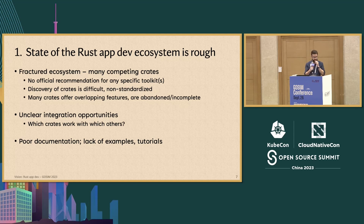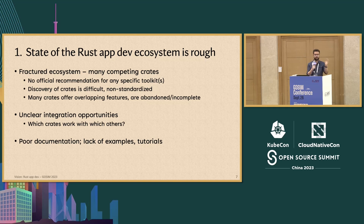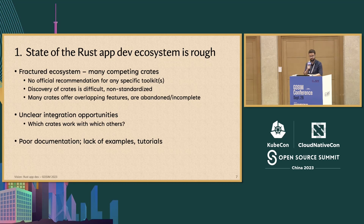We've already seen two of the best ones today: MakePad and Dioxus. One potential issue is there isn't really an official recommendation for any specific toolkit or combination of toolkits. This can make discovery of crates difficult, and means there isn't a standard approach that a newcomer to Rust app dev can get started with. Lots of these crates offer overlapping features, and it's unclear how to integrate them together — sensors, touchscreens, all these different components — how do I construct a working application environment from all these individual pieces?